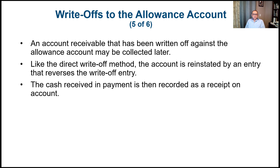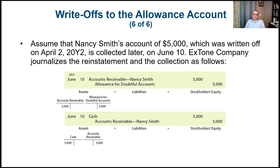An accounts receivable that has been written off against the allowance account may be collected later. Like the direct write-off method, the account is reinstated by an entry that reverses the write-off entry, and the cash received is then recorded as a receipt on account. For example, assume Nancy Smith's account of $5,000, written off on April 2nd of year two, is collected on June 10th.